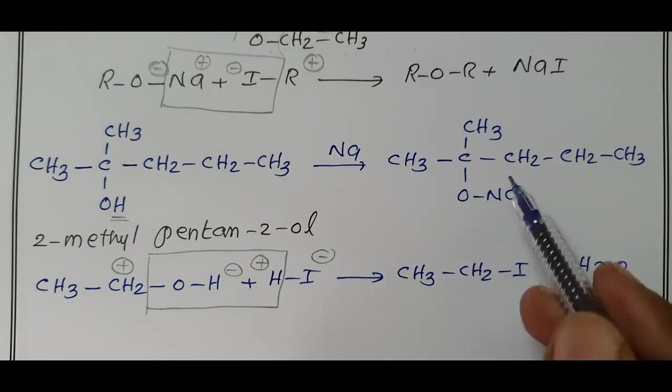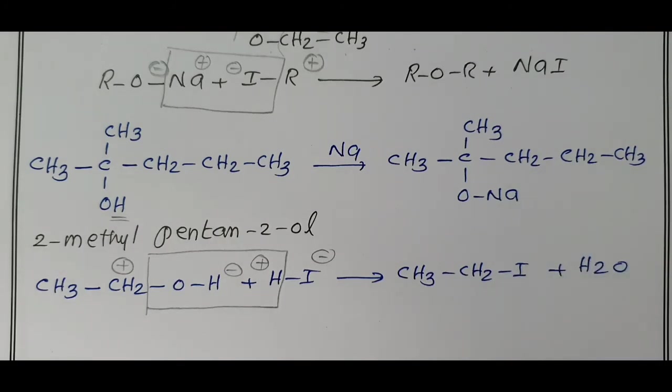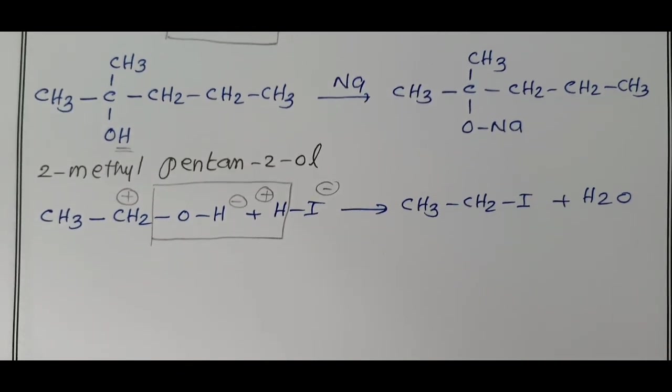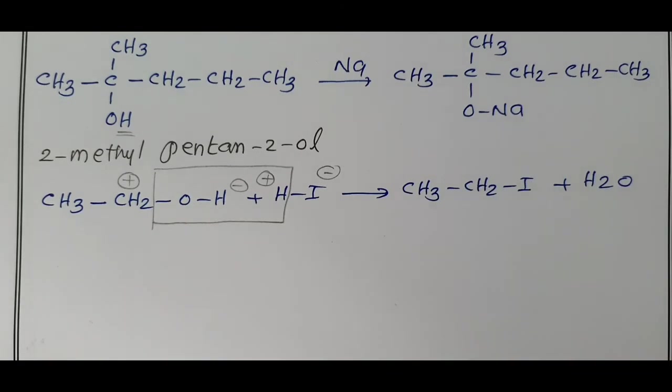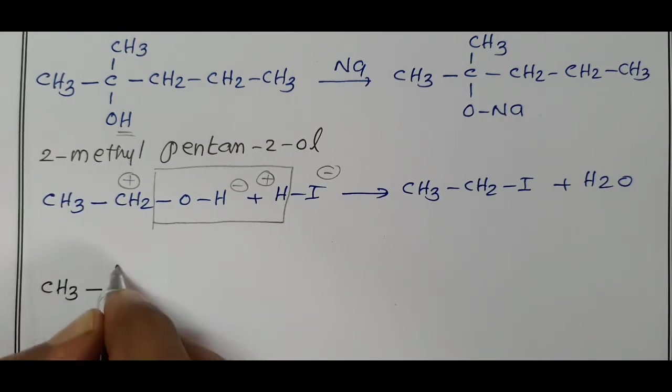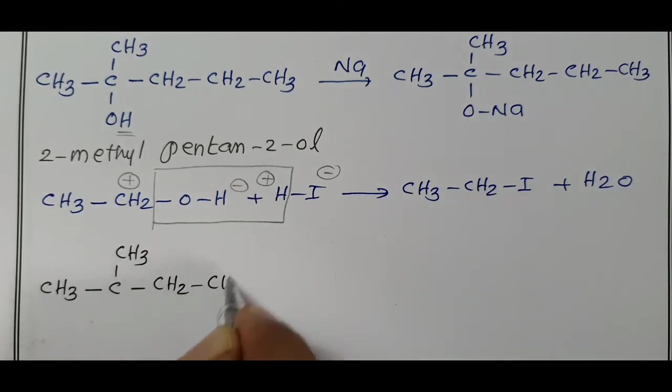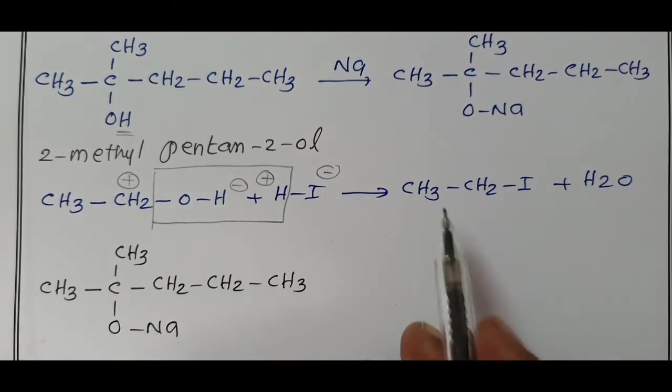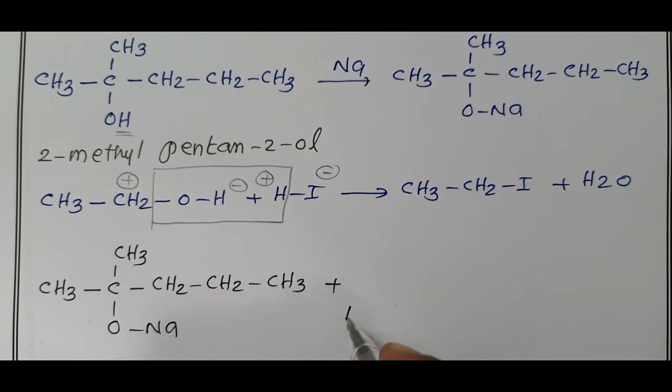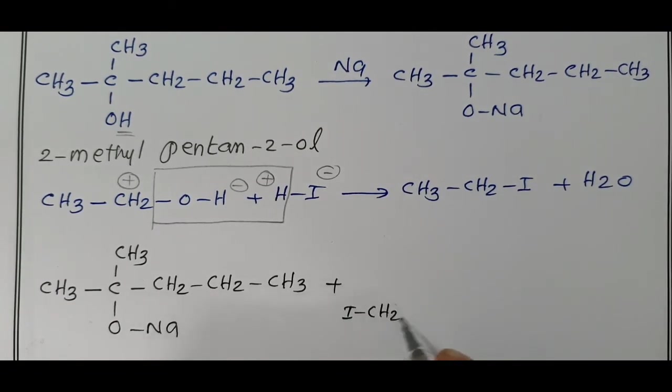Two reactants we prepared, these two reactants undergo Williamson Ether synthesis, gives 2-ethoxy-2-methyl-pentane-2-ol. Our first reactant, now we take the first reactant, CH3, C, CH3, here you have CH2, CH2, CH3. O-Na, when treated with ethyl iodide, plus I, CH2, CH3.